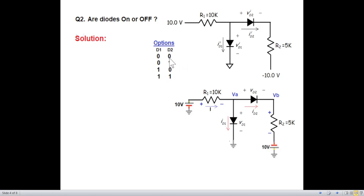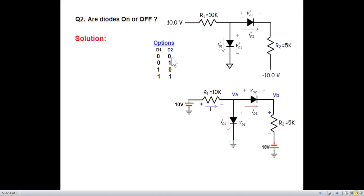Since there are two diodes, there are four possibilities: both diodes could be open (0,0), one open and the other short, or both short (1,1). So there are four possibilities in total. It is recommended that you start with both open.